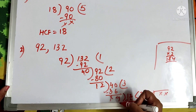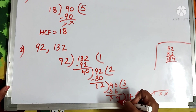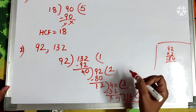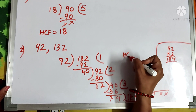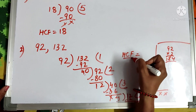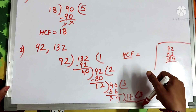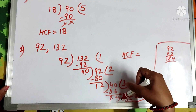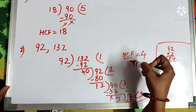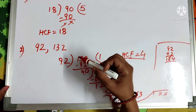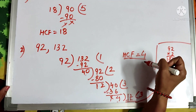It gets divided completely. The last divisor here is 4. We continue the process till we get remainder 0. Since we got 0, the last divisor is 4. Therefore, HCF of 92 and 132 is 4.